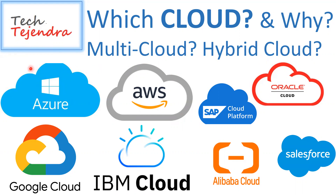Today there are four main cloud providers in the market: first is Microsoft Azure, second is Amazon Web Services also known as AWS, third is Google Cloud also known as GCP, and fourth is IBM Cloud. These are the main players, providing many services starting from IaaS (Infrastructure as a Service), PaaS (Platform as a Service), SaaS (Software as a Service), FaaS (Function as a Service), DBaaS (Database as a Service), and KaaS (Kubernetes as a Service) or Container as a Service.